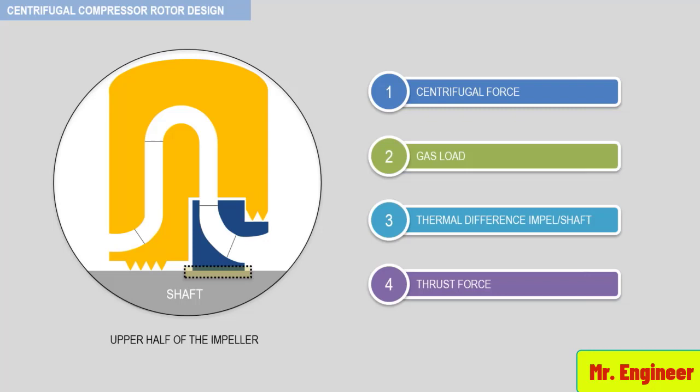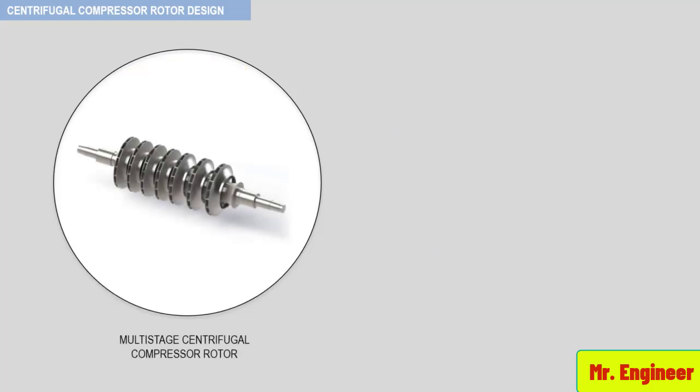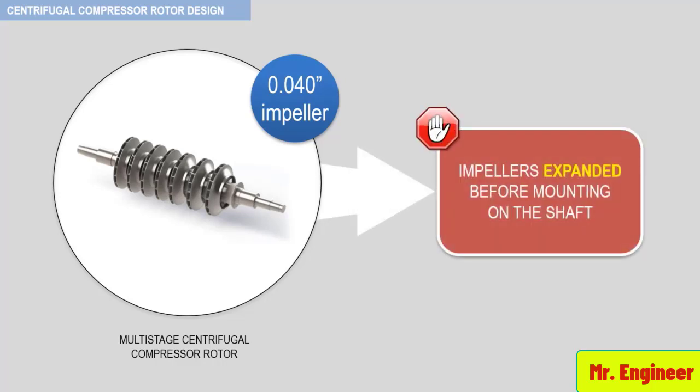Typically, impeller shrink fit values range from 0.002 to 0.003 inches shrink per inch of shaft diameter. Let's say that the rotor that you can see here has a shrink fit in excess of 0.04 inch for each impeller. In this case, the impeller would have to be expanded in excess of 0.04 inch before mounting on the shaft. Typical mounting stresses are 20,000 to 30,000 psi.